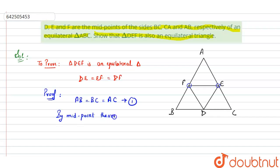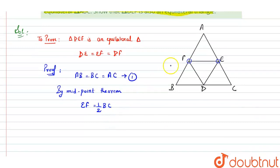we can write EF equals half of BC. Similarly, DF, these are also the midpoints, so DF equals half of AC. And ED, these are also the midpoints, so ED also equals half of AB.